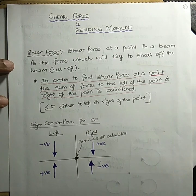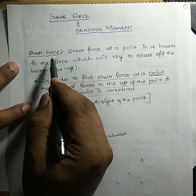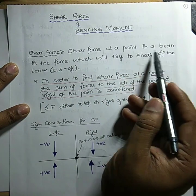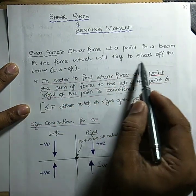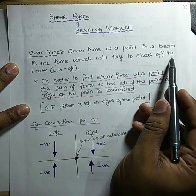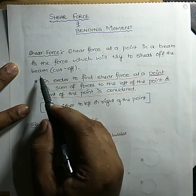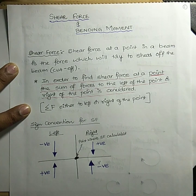Going to the first part: shear force. Shear force at a point in a beam is the force which will try to shear off, that means cut off the beam. So it is a force which tries to cut off the beam — that force we call shear force.